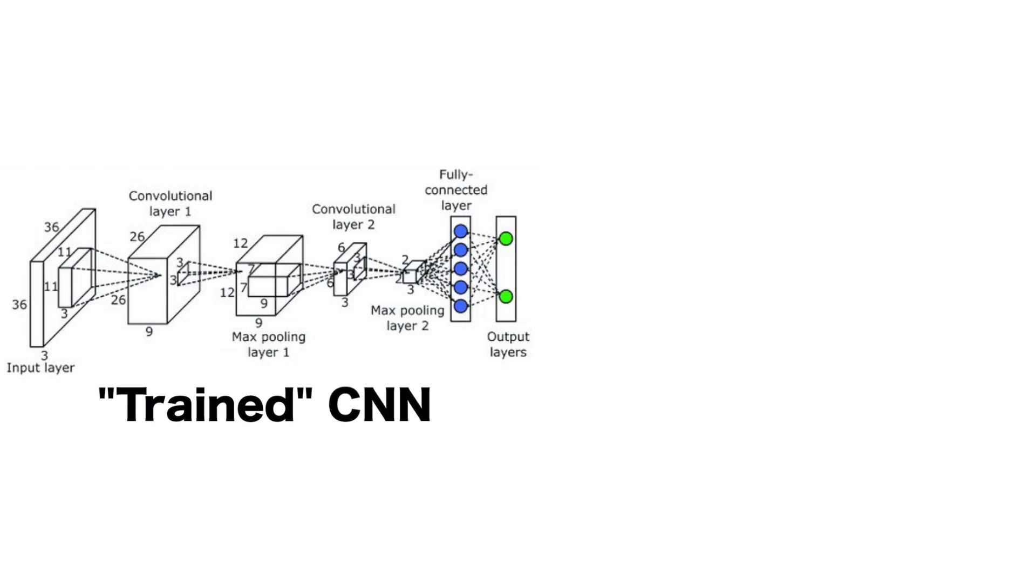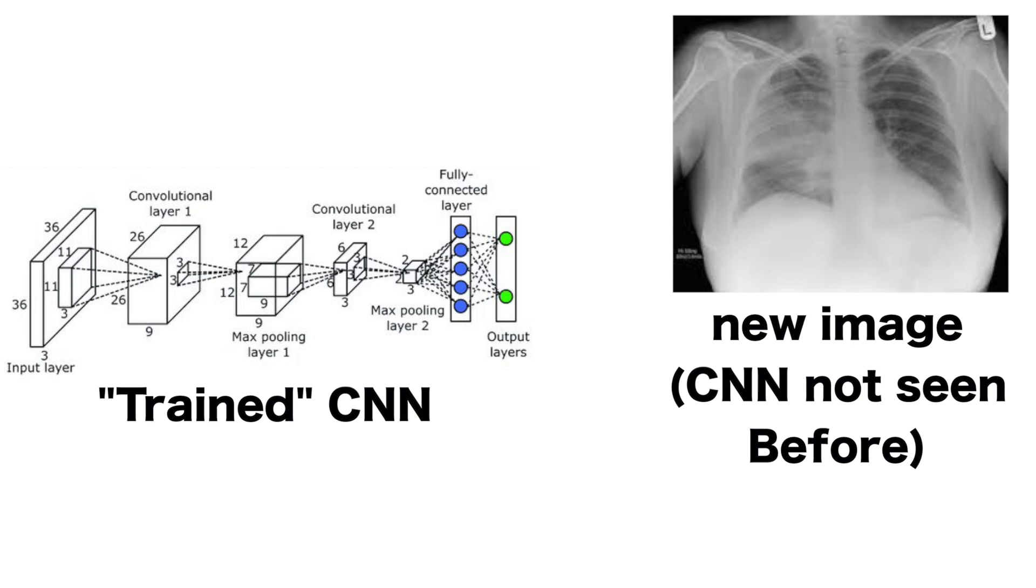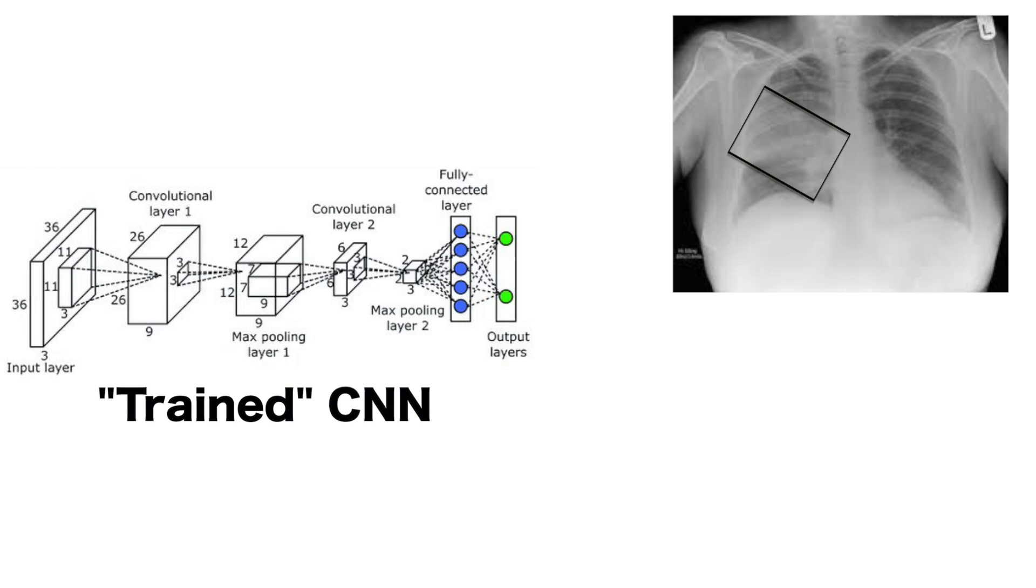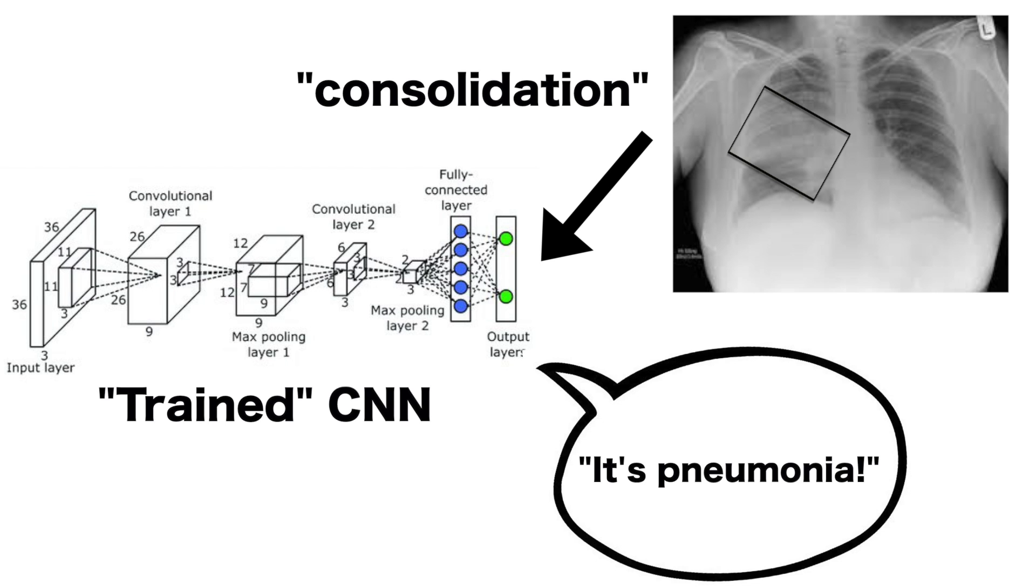And note that some images can have more than one class. For example, pneumonia could be present as well as emphysema and a nodule in the lung. After being given a large number of images with all these associated categories, the algorithm learns what features to look for to distinguish between one category or another. For example, it will learn that an area of haziness, which we call consolidation, on the chest x-ray is suggestive of pneumonia.